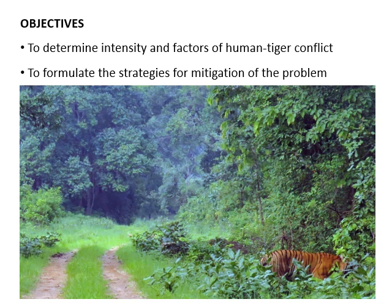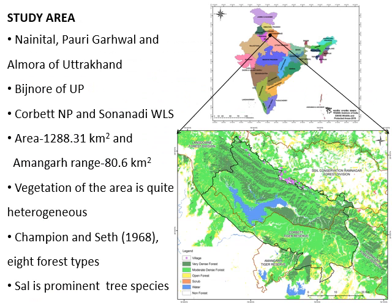There are two objectives for this study: first, to determine the intensity and factors of human-tiger conflict in Corbett Tiger Reserve; and second, to formulate strategies for mitigation of the problem. Corbett Tiger Reserve is located in Nainital, Pauri Garhwal, and Almora districts of Uttarakhand state of India.